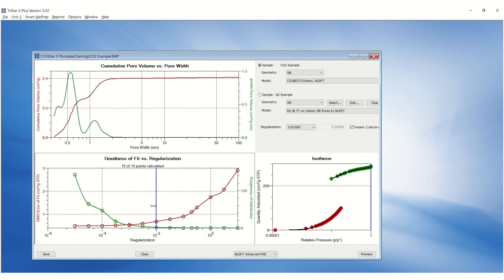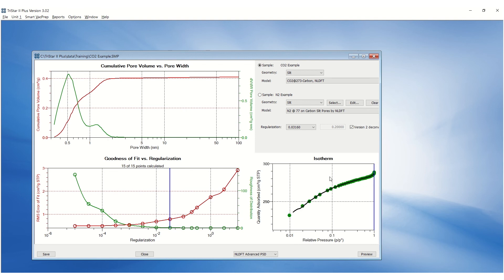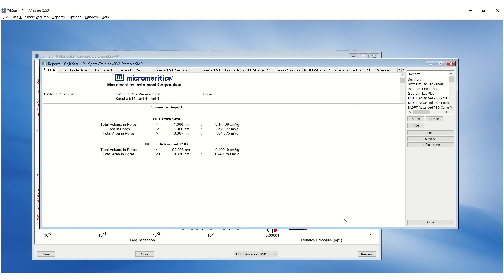As you adjust the regularization, you can see if the model in the black line fits the data by zooming in on the graph in the bottom left corner. Click on Auto Scale All Axes to zoom out. Click on the Preview button to generate a report.